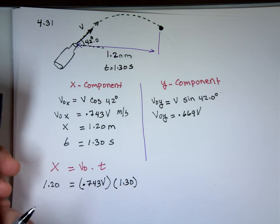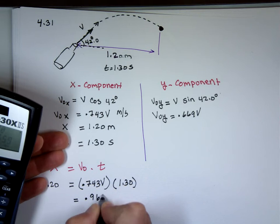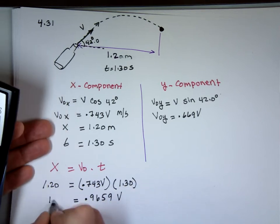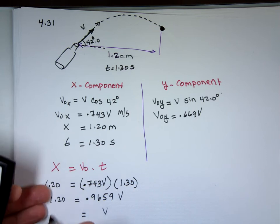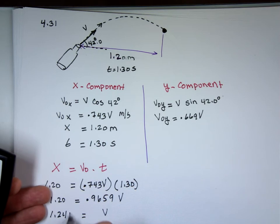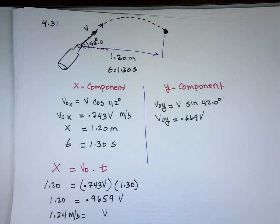Calculating: 0.743 × 1.30 = 0.9659. So 0.9659 × V = 1.20. Dividing: V = 1.20 / 0.9659 ≈ 1.24 m/s. Using three significant digits, the initial velocity is 1.24 meters per second. Checking the answer — correct!